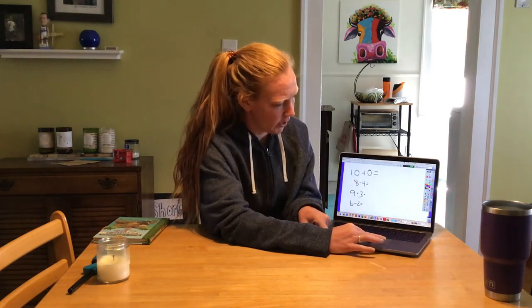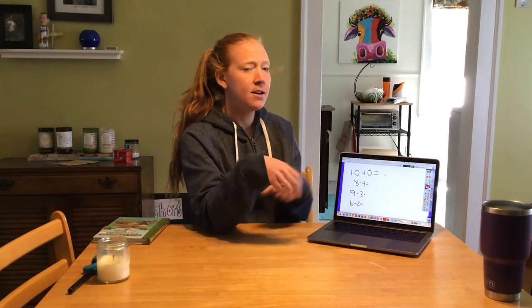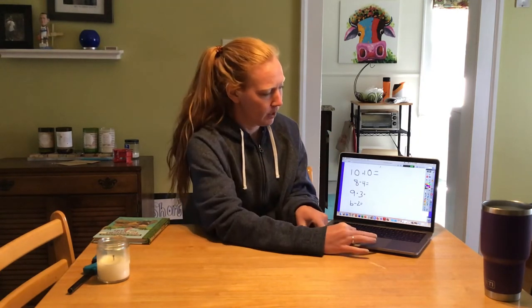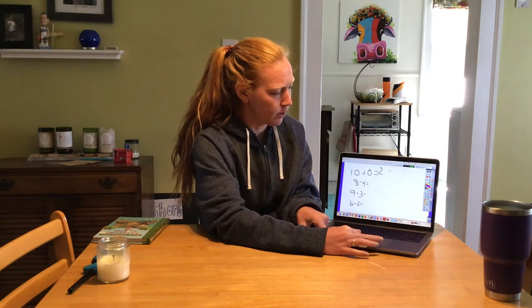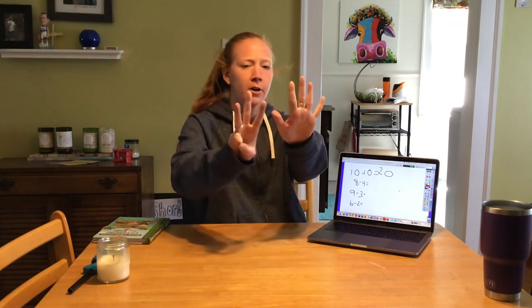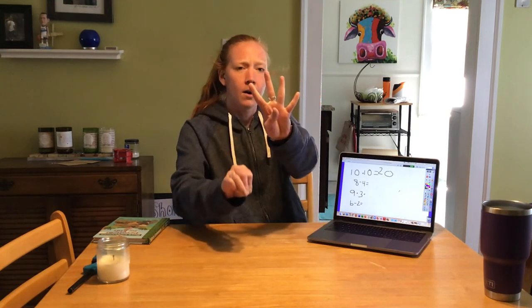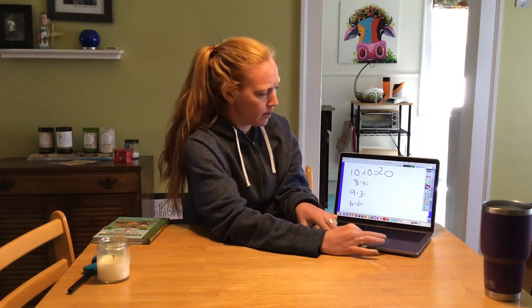Let's do some bonus questions here at the end — this first one's a tricky one: 10 plus 10. If we have two groups of 10: 10, 20. So 10 plus 10 equals 20. Okay. If we have 8 minus 4 — minus means it's going to be getting smaller. So if we started with 8 and we take away 1, 2, 3, 4 — we have 4 left.